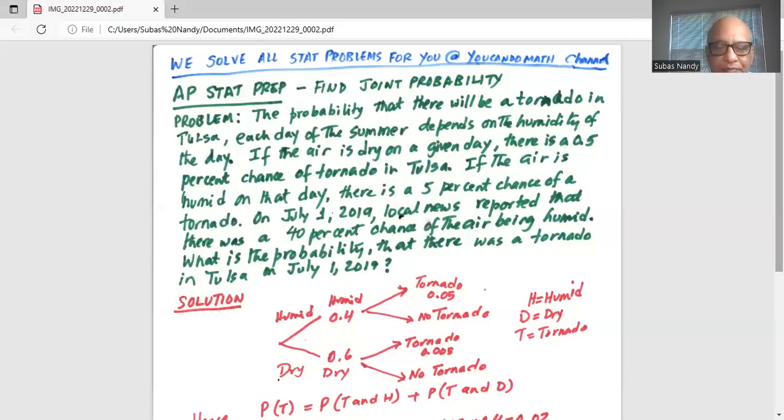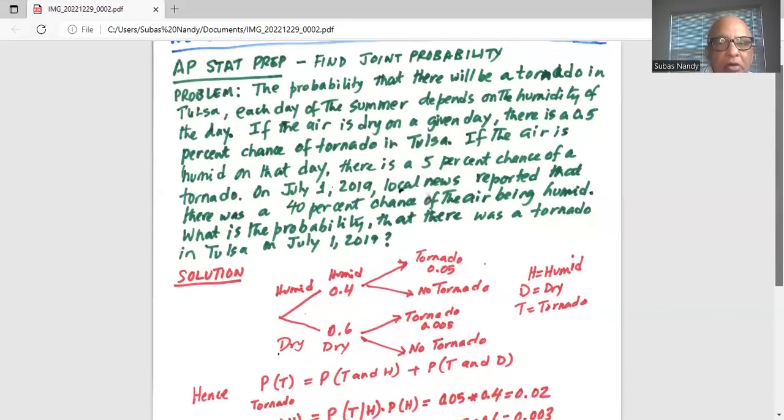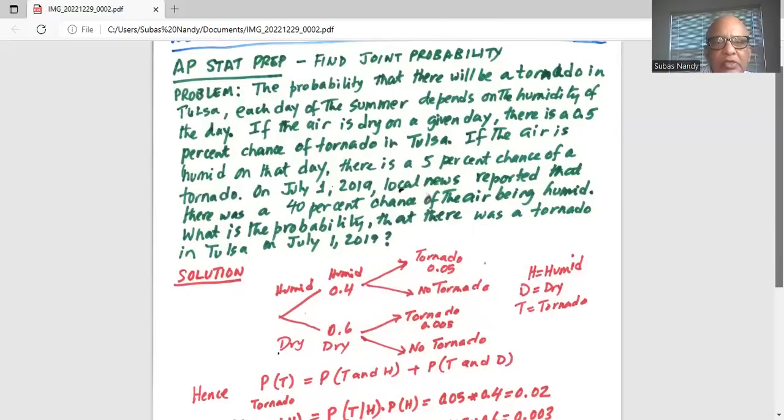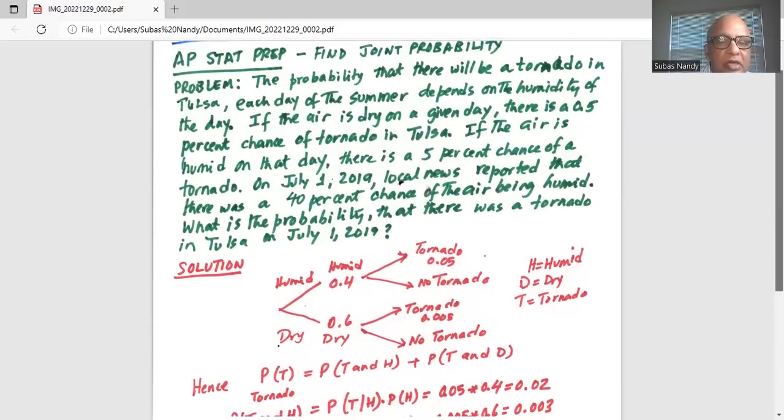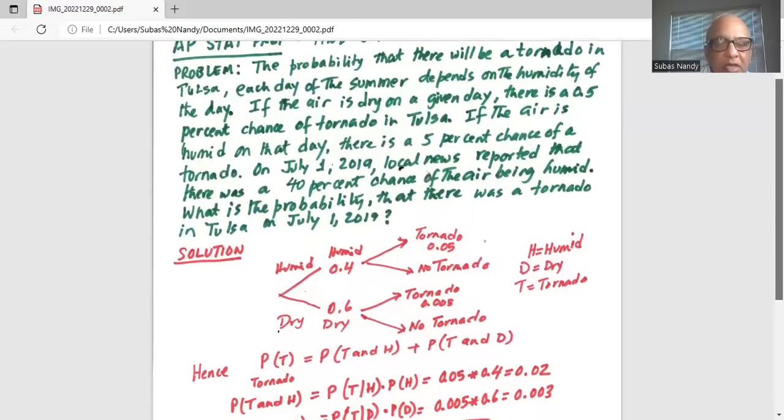Similarly, on a dry day, the probability of a dry day is 0.6. Tornado chance is 0.005, because they said if the air is dry on a given day, there is a 0.5% chance of tornado in Tulsa. 0.5% means in decimal 0.005. And the chance of no tornado on a dry day is 0.995.